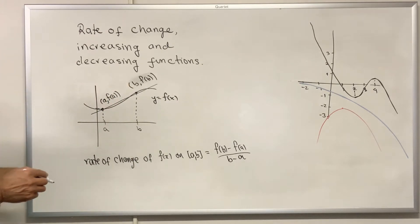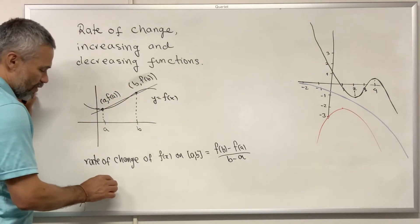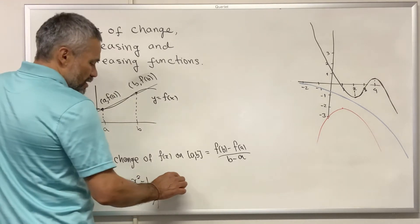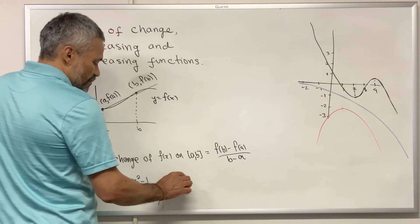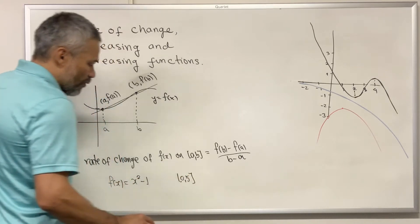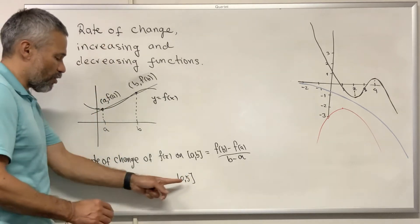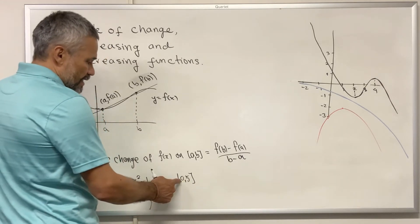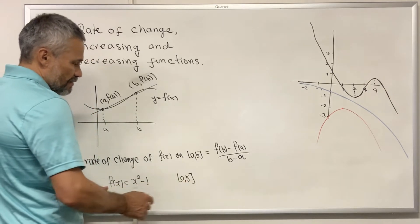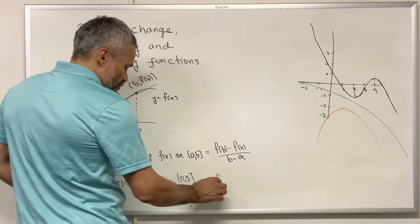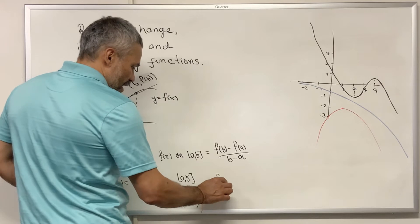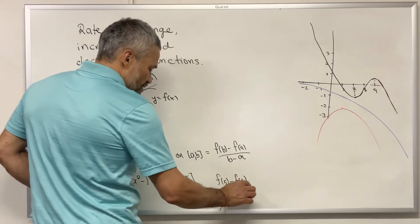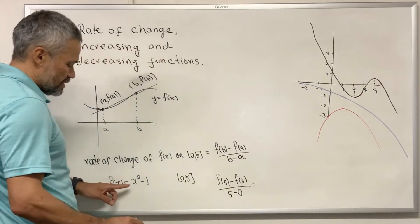Let's see an example. We have f(x) equal to x squared minus one and we have the interval [0, 5]. What would be the rate of change of this function on this interval? In this case a is zero, b is five, and the rate of change will be f(5) minus f(0) over five minus zero.